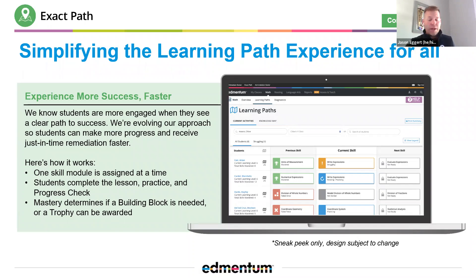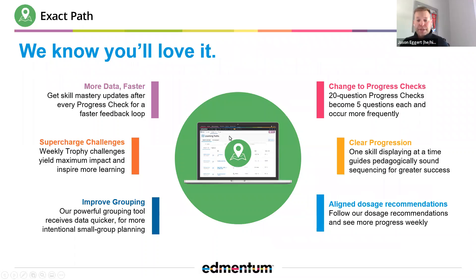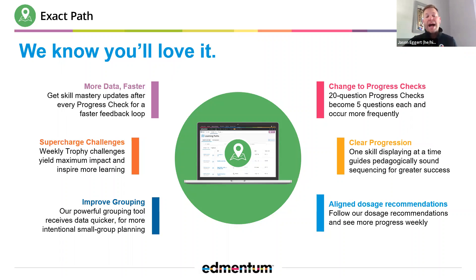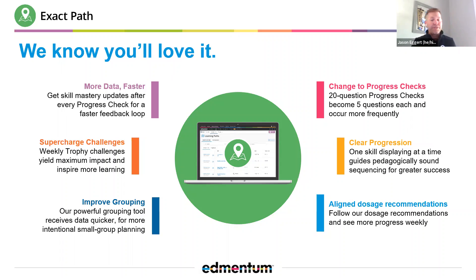It's only going to be five questions, and kids are going to be able to earn those trophies very quickly. We think you're really going to love this. Kids are going to get much more immediate feedback on how they are doing. They're going to earn those trophies much more quickly, getting five-question progress checks instead of the 20-question progress checks.